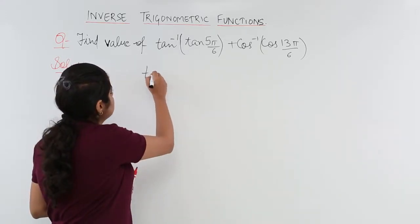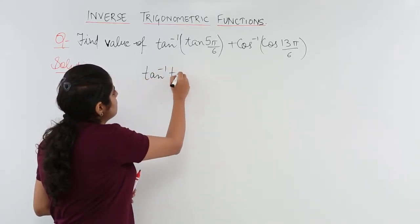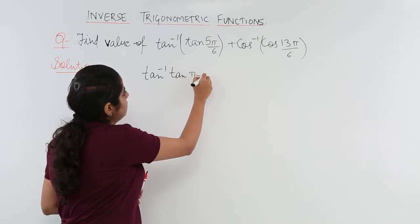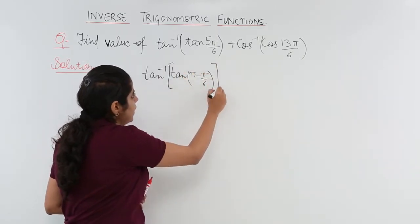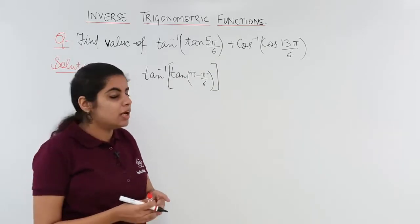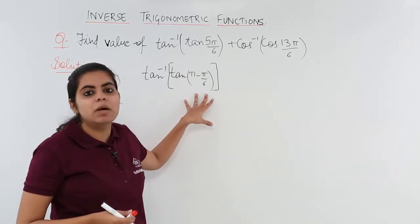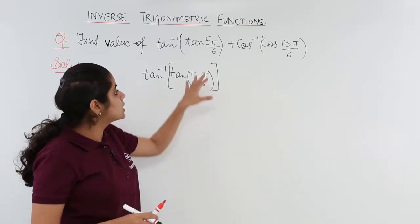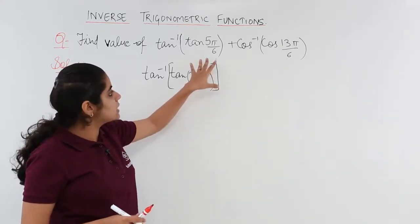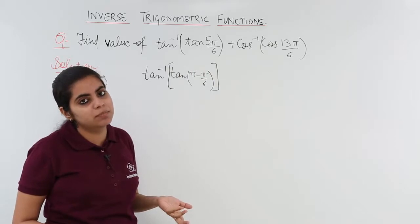So my question changes to tan inverse tan π minus π by 6. If I modify 5π by 6 in a manner as π minus π by 6, isn't it incorrect? No, it's correct because π minus π by 6 and 5π by 6 mean the same thing, right?